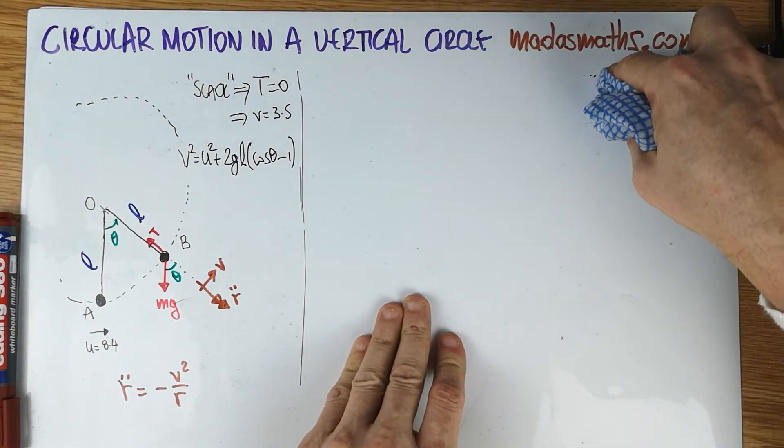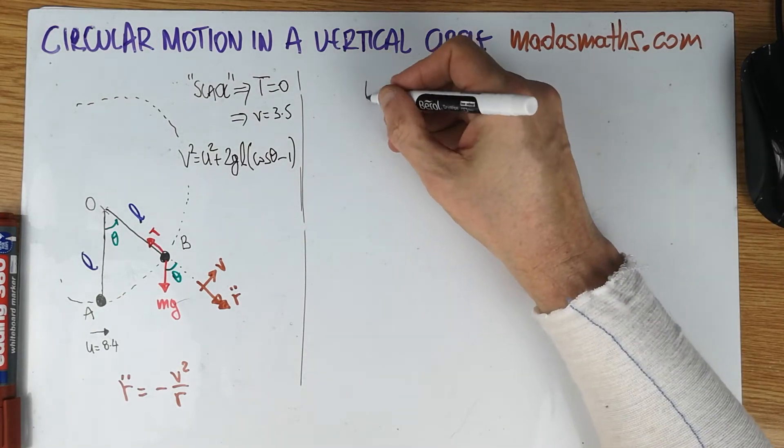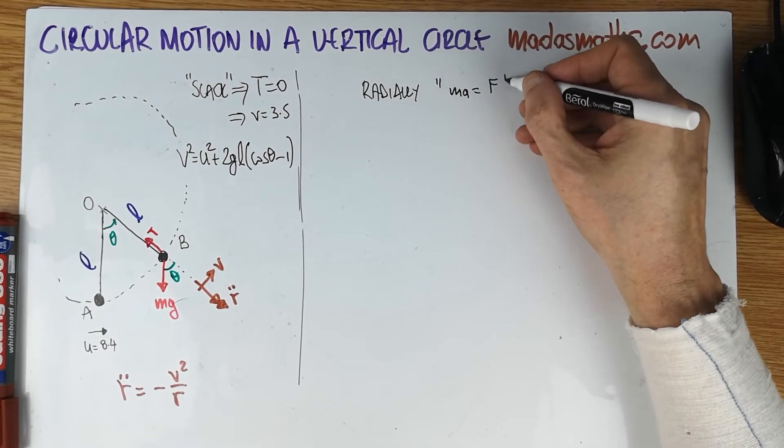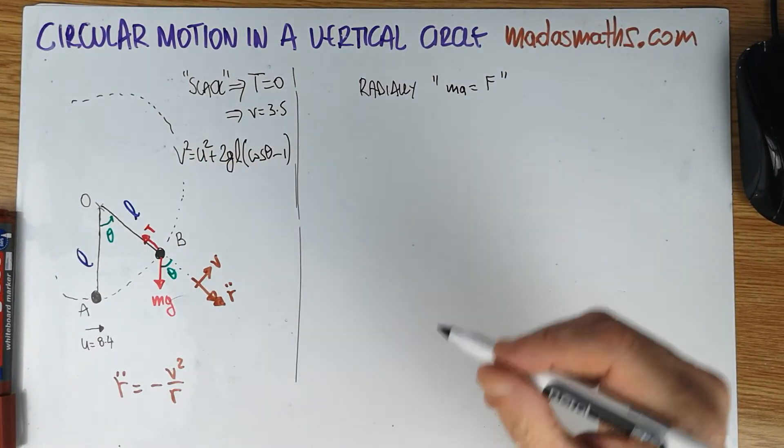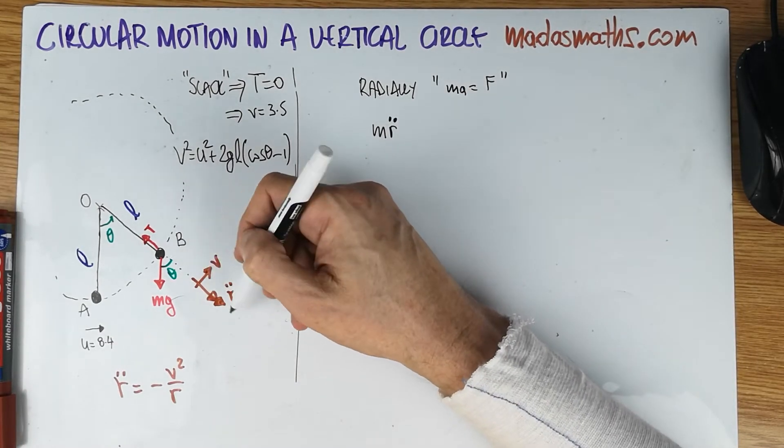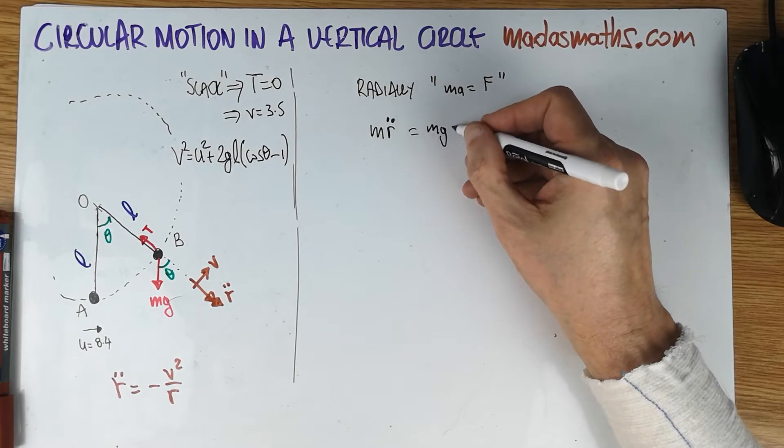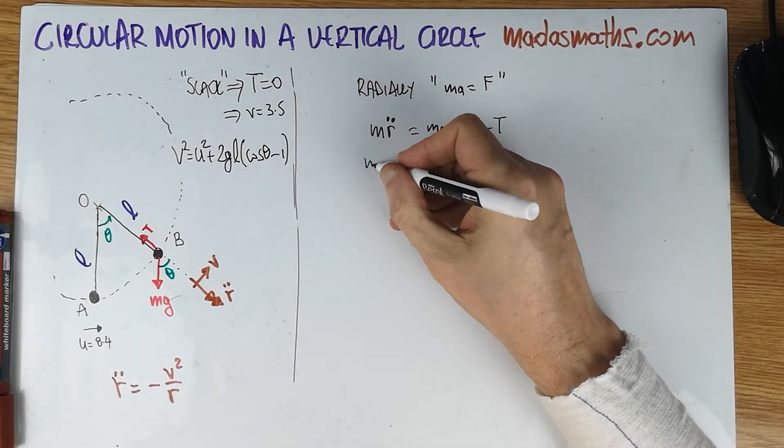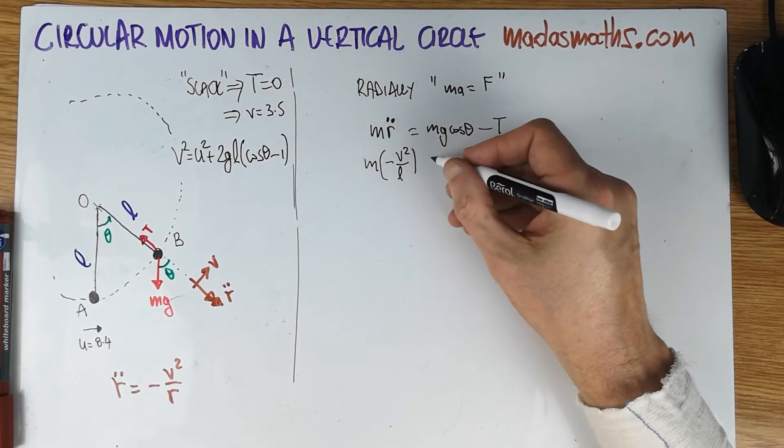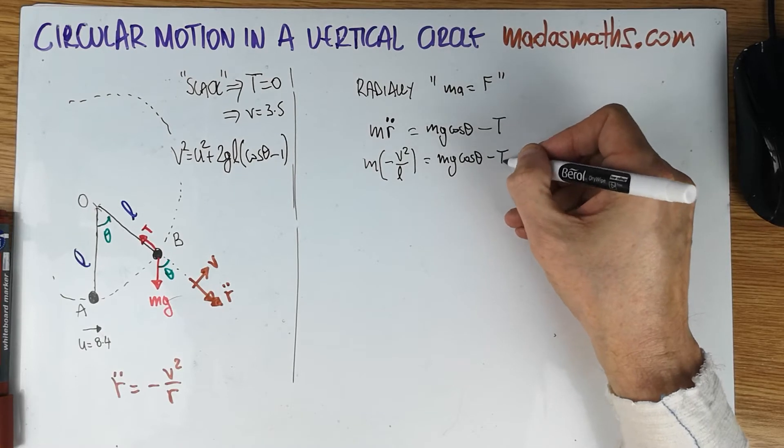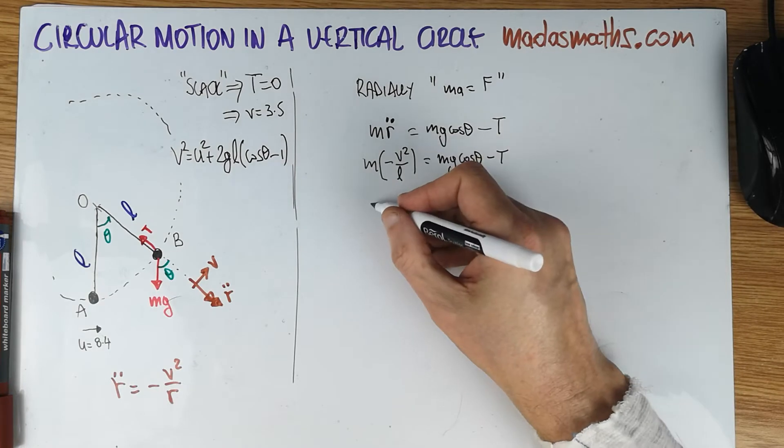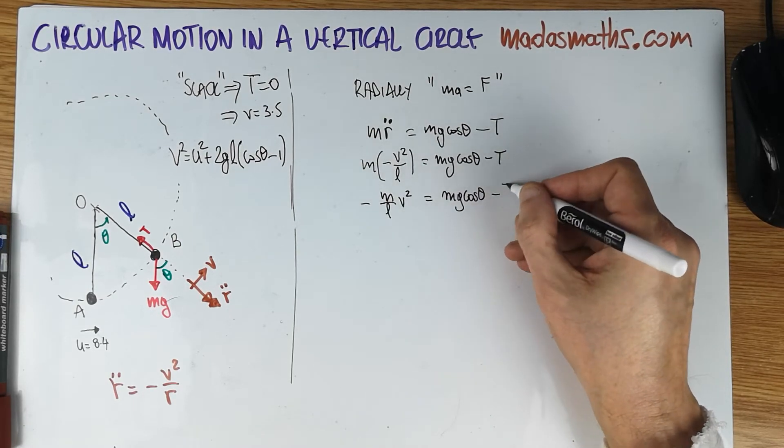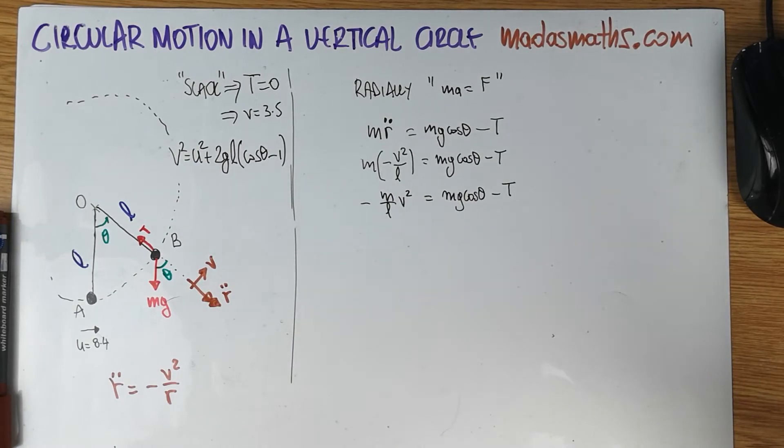And now we need to look at the radial direction. In the radial direction, radially, we have, of course, MA is equal to resultant F. So we're looking in this direction. MR double dot. In this direction, we have Mg cos theta, that is radially outwards, minus the tension. Let's put one more thing in. Minus MV squared over L is equal to Mg cos theta minus T. So this would have been the equation of motion in a radial direction.